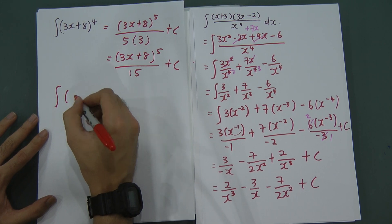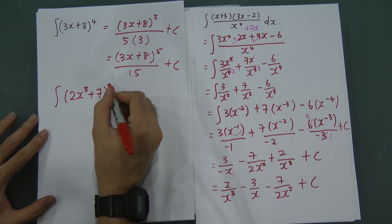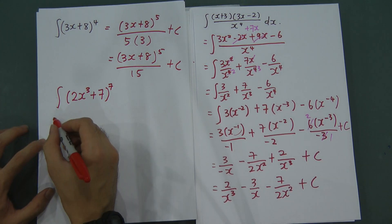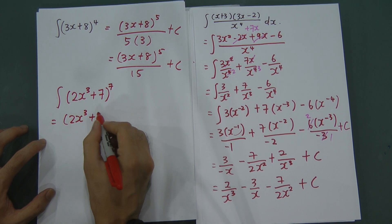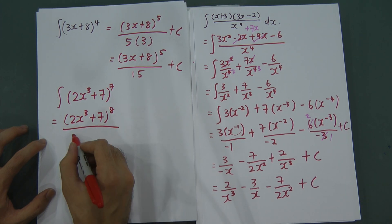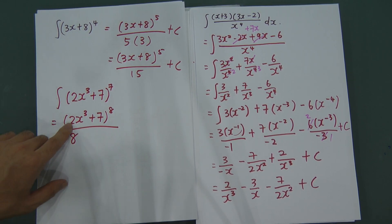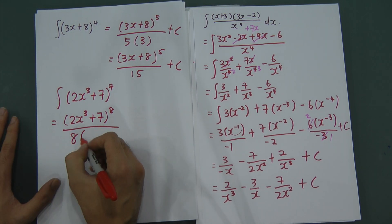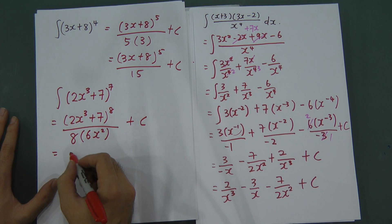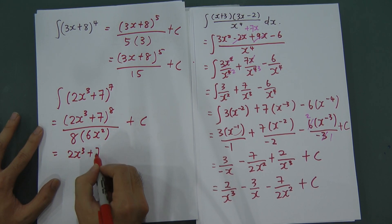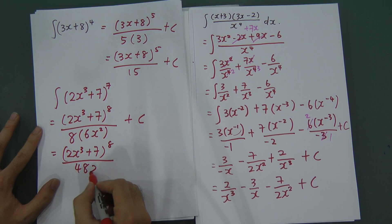Let's try another example: integrate (2x³ + 7)⁷. First, add 1 to the power to get (2x³ + 7)⁸ divided by 8. Then differentiate the inside: bring the 3 down, giving 6x². So the final answer is (2x³ + 7)⁸ divided by 48x² plus C, because 8 multiplied by 6 is 48.